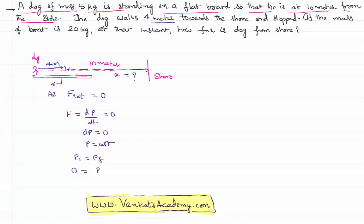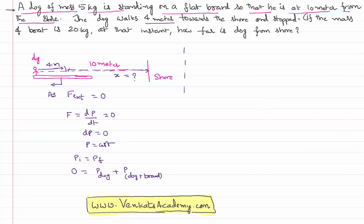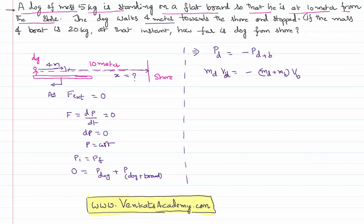Finally, momentum of the dog plus momentum of the board — but the board alone doesn't move backward, because the dog is also on the board, so both of them move in a backward direction. Taking this into consideration, momentum of the dog equals minus momentum of the dog-plus-board. That is: mass of the dog times velocity of the dog equals minus (mass of the dog plus mass of the boat) times their velocity.